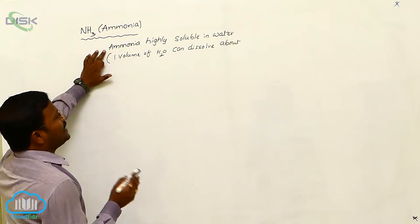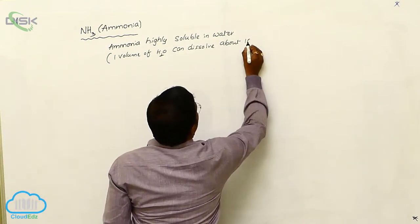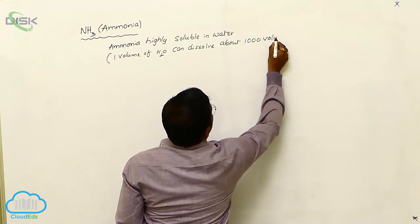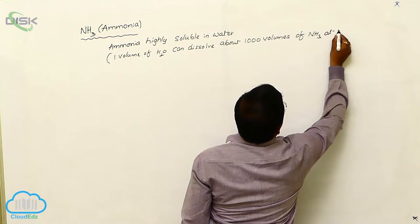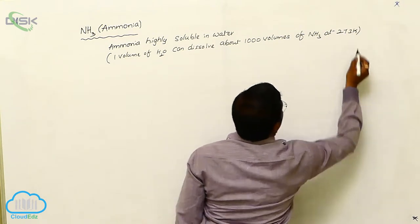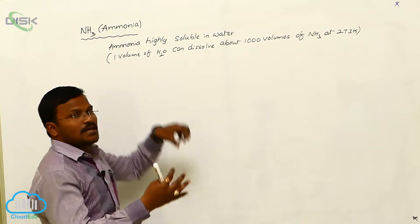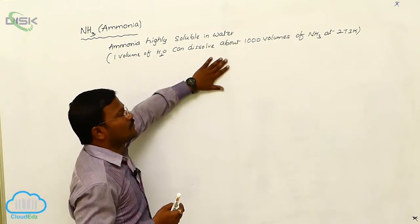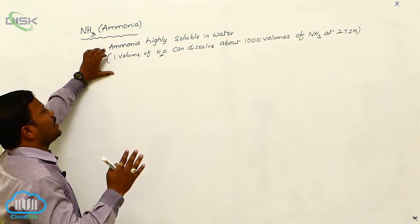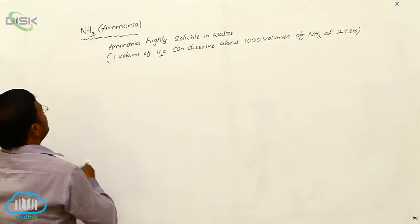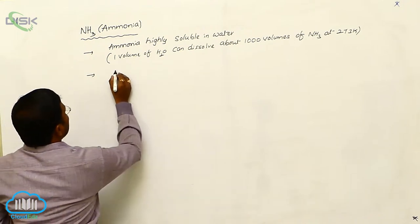Ammonia is highly soluble in water. Approximately one volume of water can dissolve about one thousand volumes of ammonia at 273 Kelvin temperature. This is the reason why ammonia has greater solubility character in water.